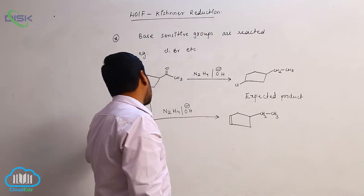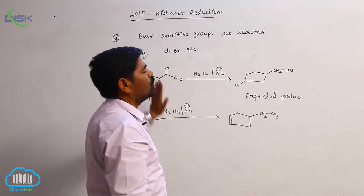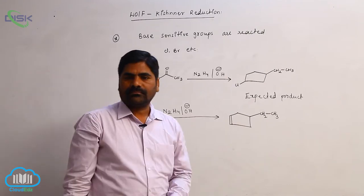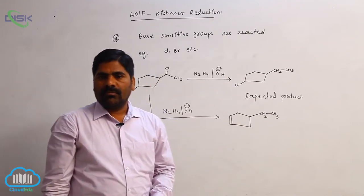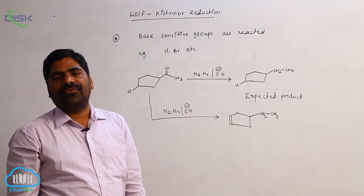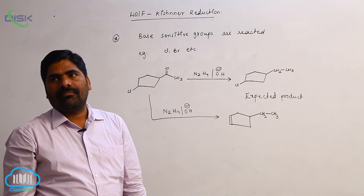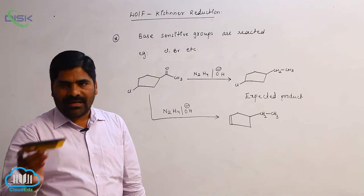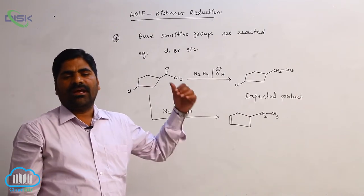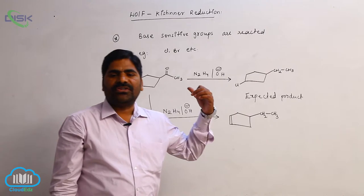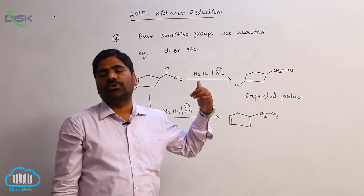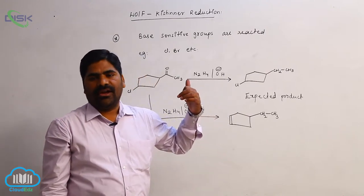So both the keto group is reduced as well as the halogen is eliminated. Therefore: Clemmensen reduction involves acid-sensitive groups, whereas Wolff-Kishner reduction involves base-sensitive groups.